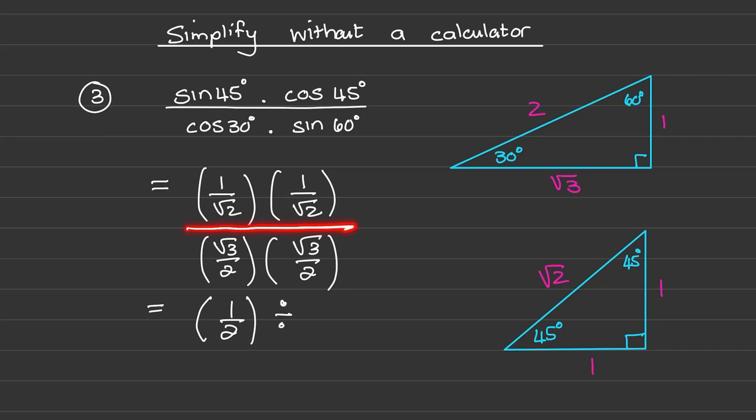And I'm dividing it by square root 3 times square root 3 over 2 times 2. So that is 3 over 4.